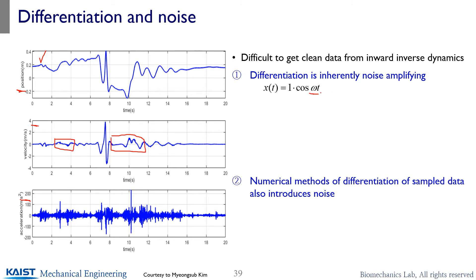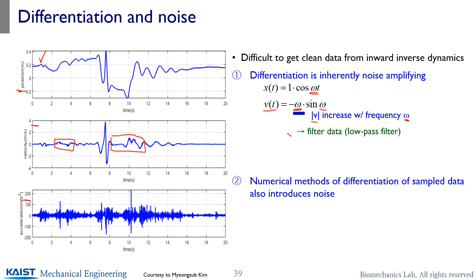When you take the derivative of a simple harmonic signal, higher frequency components get multiplied by their frequency, so higher frequency components contribute more to the magnitude of the velocity and acceleration. Your velocity or acceleration will increase with frequency omega. Since noise is typically high frequency, differentiation amplifies it. We usually resolve this issue using low-pass filtering.